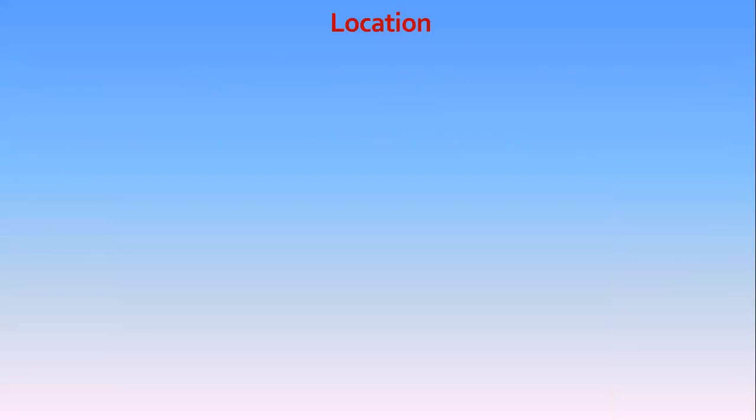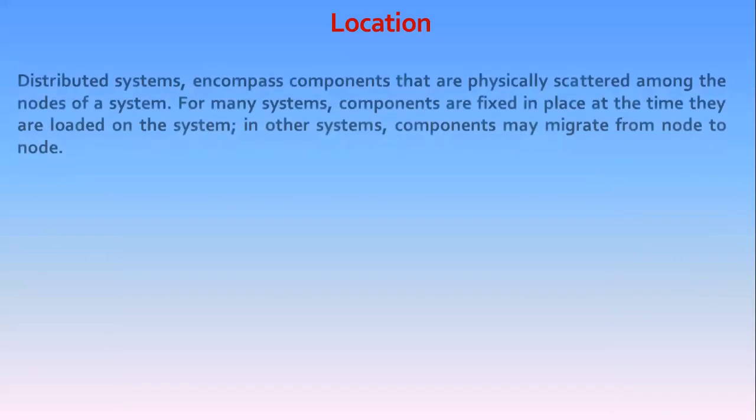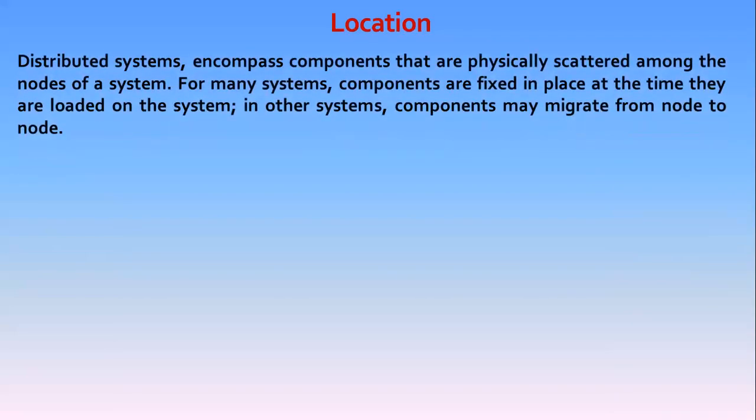Coming to locations: distributed systems by their nature encompass components that are physically scattered among the nodes of the system. For many systems, components are fixed in place at the time they are loaded onto the system.